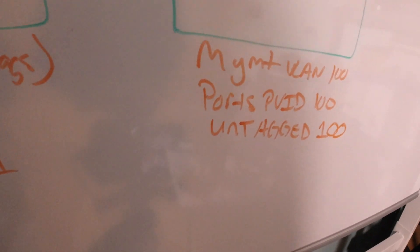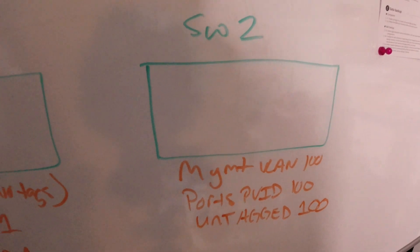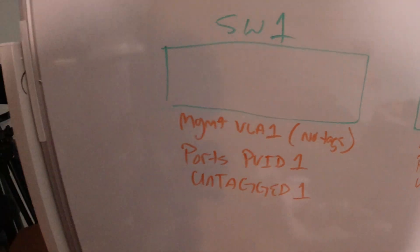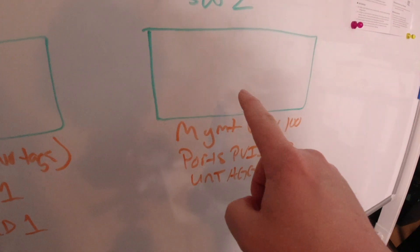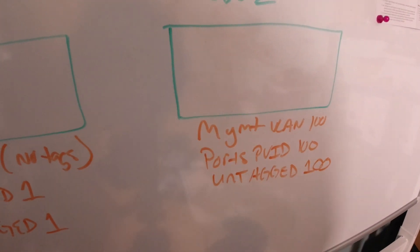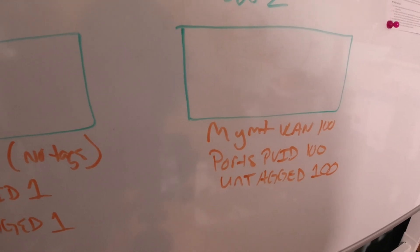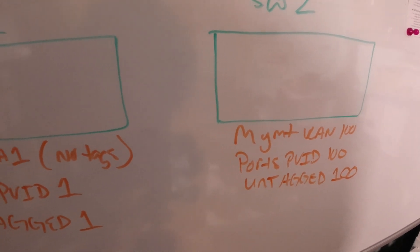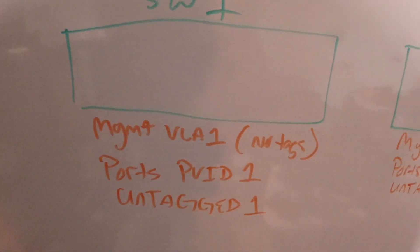So in the grand scheme of things, I was told — when I questioned the design of this — that it would keep somebody from plugging in and being on their default VLAN, which they weren't using. So that is correct. It would keep them from VLAN one.